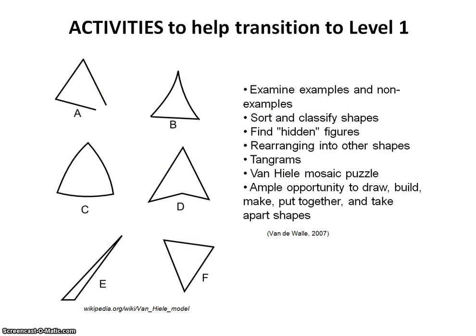Teachers can use activities to help students transition from level 0 to level 1. Children need to examine many examples and non-examples. Here is an example of six different pictures that may or may not be triangles. Children need to be able to sort and classify shapes to see what a triangle has in common: three corners, straight sides, that it doesn't matter if it's upside down, and that it has no bent-in parts.